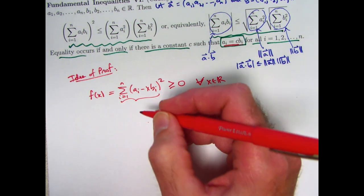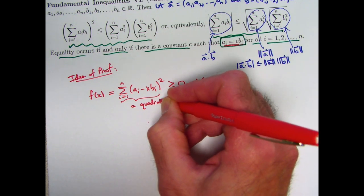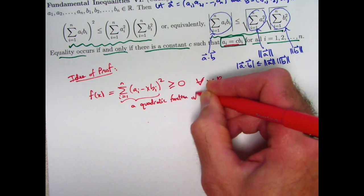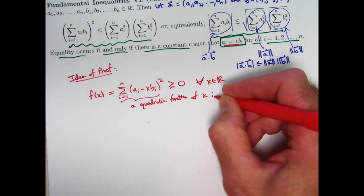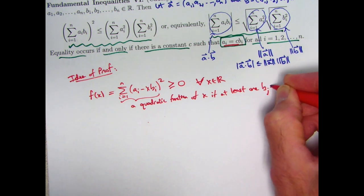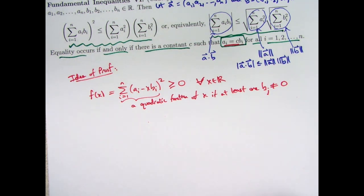All right, now it turns out to be an important observation. It also turns out to be important to recognize that as a function of x, this is a quadratic, a function of x, at least if at least one of those b's is non-zero. If at least one b, maybe called bⱼ for some j between one and n, is non-zero. If all the b's were zero, this would not be a quadratic, it would be a constant function. So since we are just talking about the idea of the proof, let's imagine that that is the case. If you were doing a nice proof, you'd want to sort of separate into two cases: what if all the b's are zero and what if at least one of the b's is non-zero.